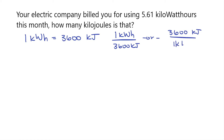Since I'm starting with kilowatt-hours and converting into kilojoules, I want to have it where kilojoules is on the top and kilowatt-hours is on the bottom, like this fraction here on the right. That's because I want the units of kilowatt-hours to cancel, leaving me only with units of kilojoules.